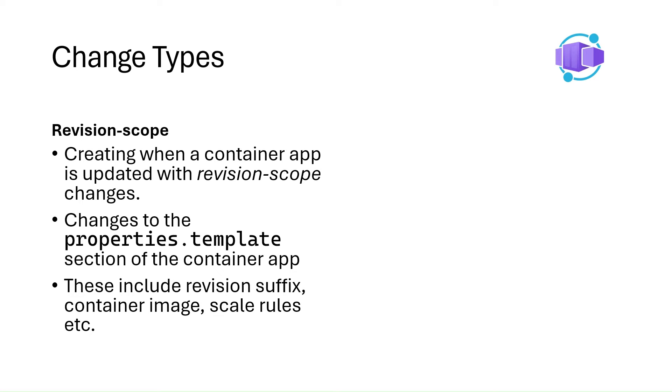Changes to a container app fall under two categories: revision scope or application scope changes. Revision scope changes trigger a new revision when you deploy your application, while application scope changes don't. A new revision is created when a container app is updated with revision scope changes — these changes are limited to the revision in which they're deployed and don't affect other revisions. This includes changes to any parameters in your properties.template section, such as your revision suffix, container configuration and images, and scale rules.